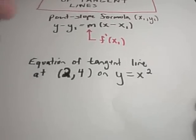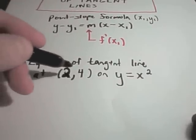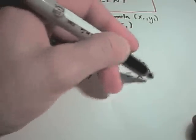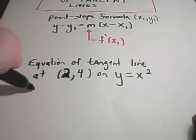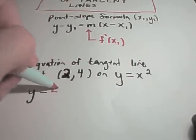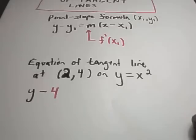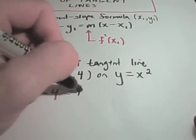Suppose we're going to find the equation of the tangent line at the point (2, 4) on the graph of y equals x squared. We already know this point, so it's going to be y minus 4. We just have to figure out the slope.